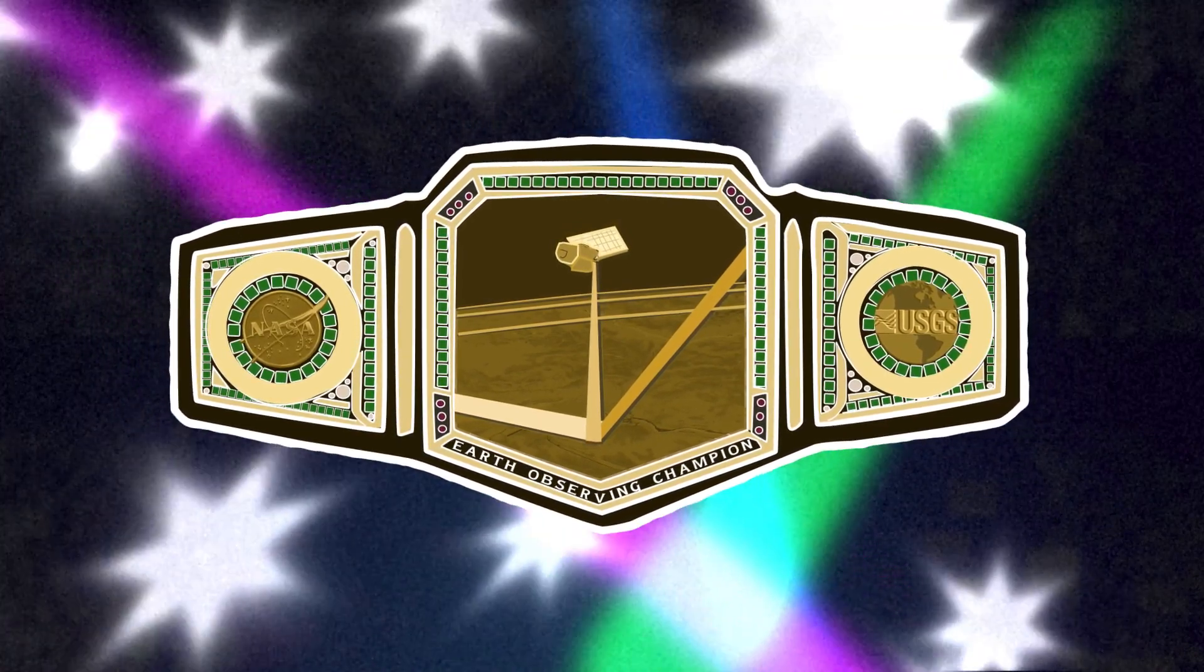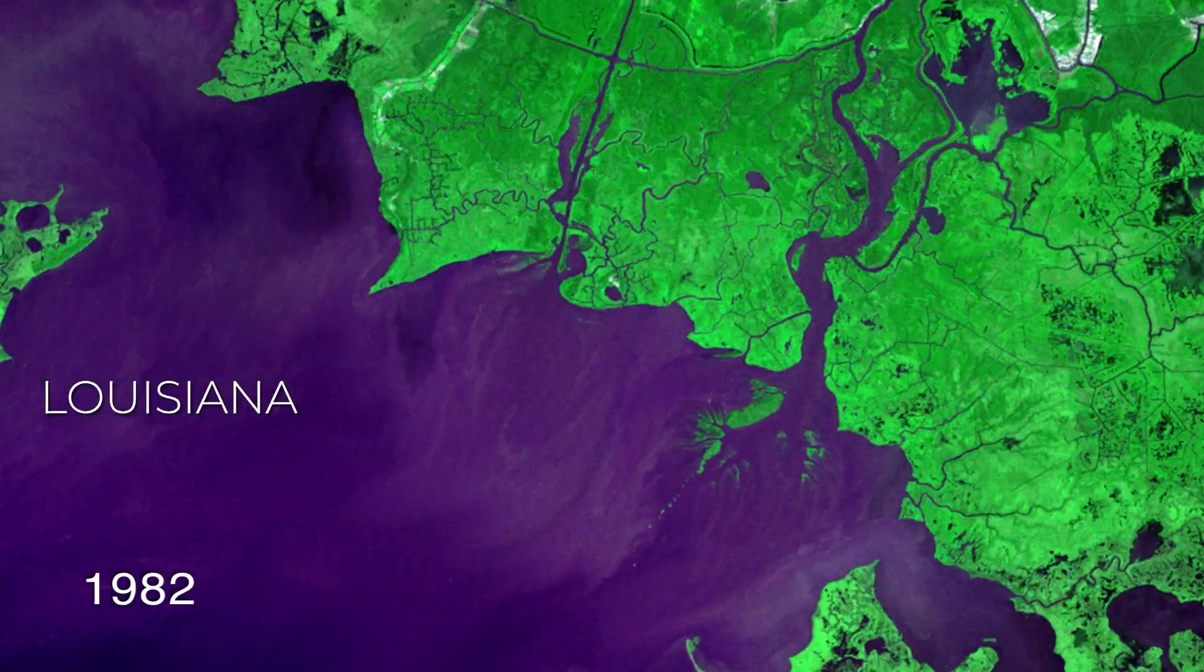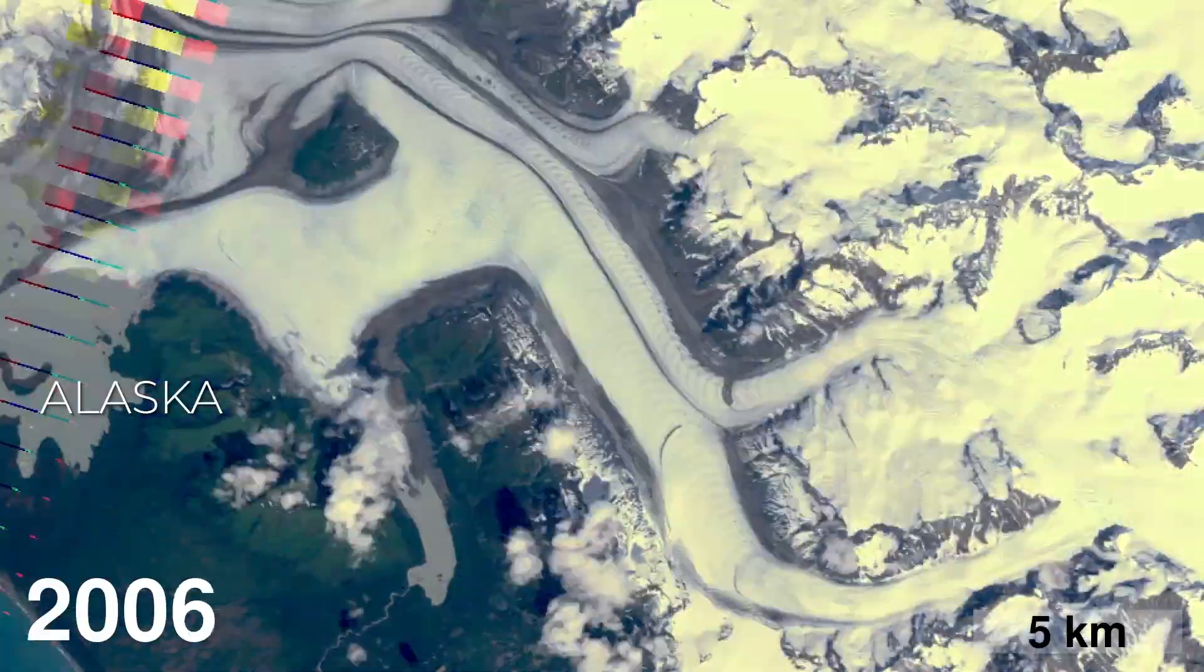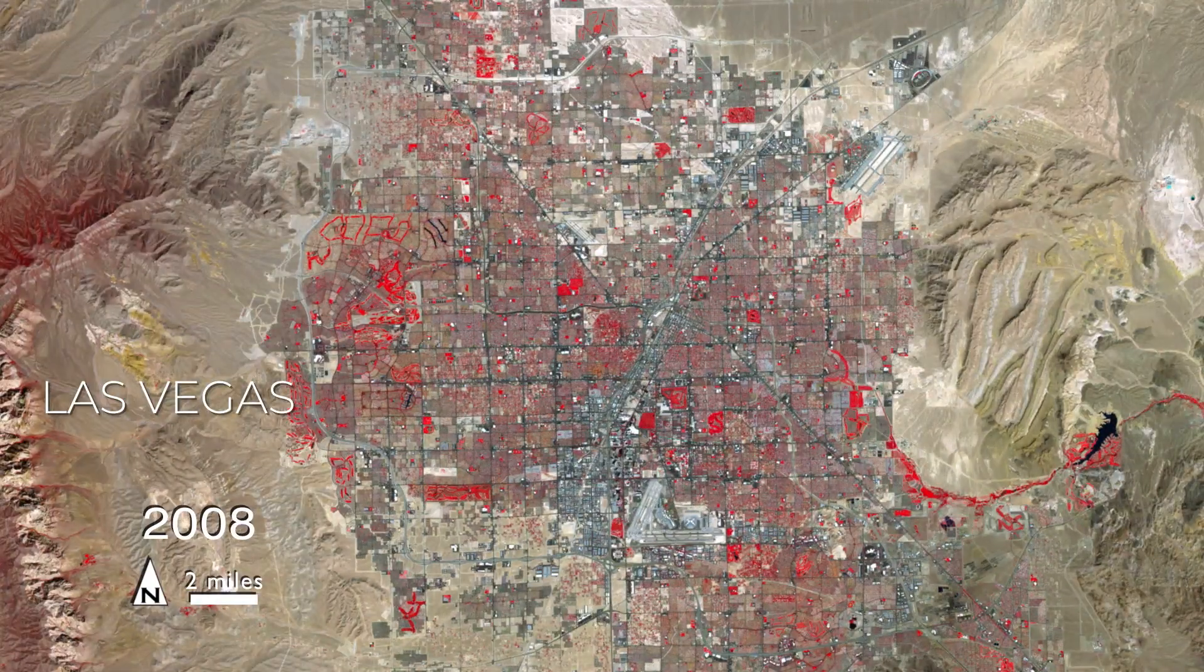Landsat holds the title for the longest continuous space-based record of Earth in existence. That's 50 years of scenes like these, helping scientists and researchers understand how our planet is changing over time.